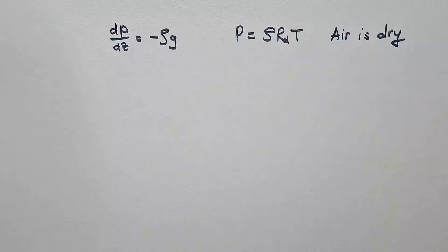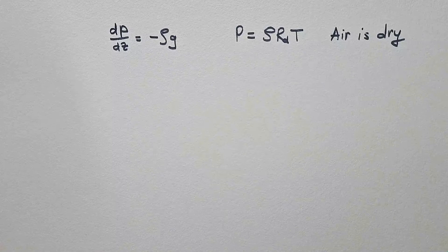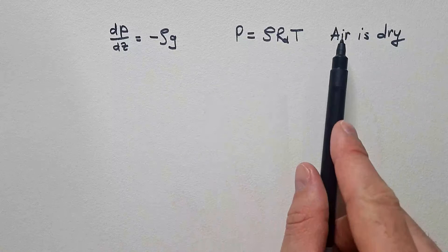Now, if you want to take into account moisture in the air, then this temperature should be virtual temperature, but I am not going to talk about that now. Later I will have a playlist on atmospheric thermodynamics, and then we will define that exactly. For now, let's just assume that air is completely dry.